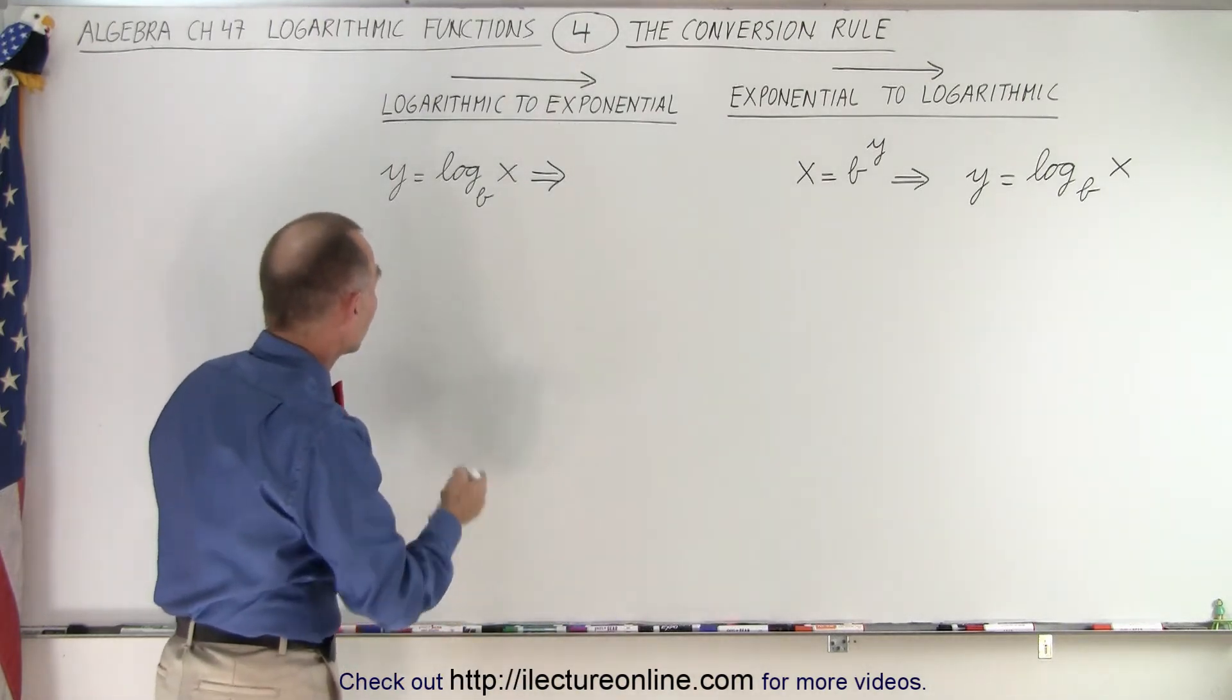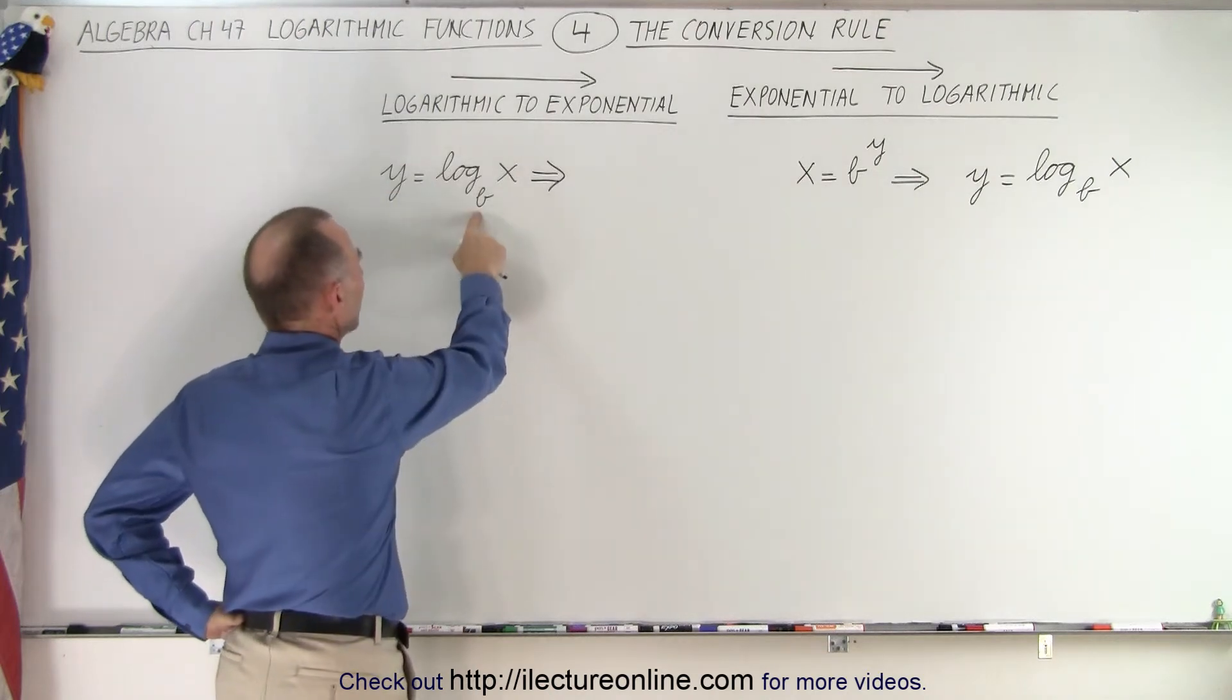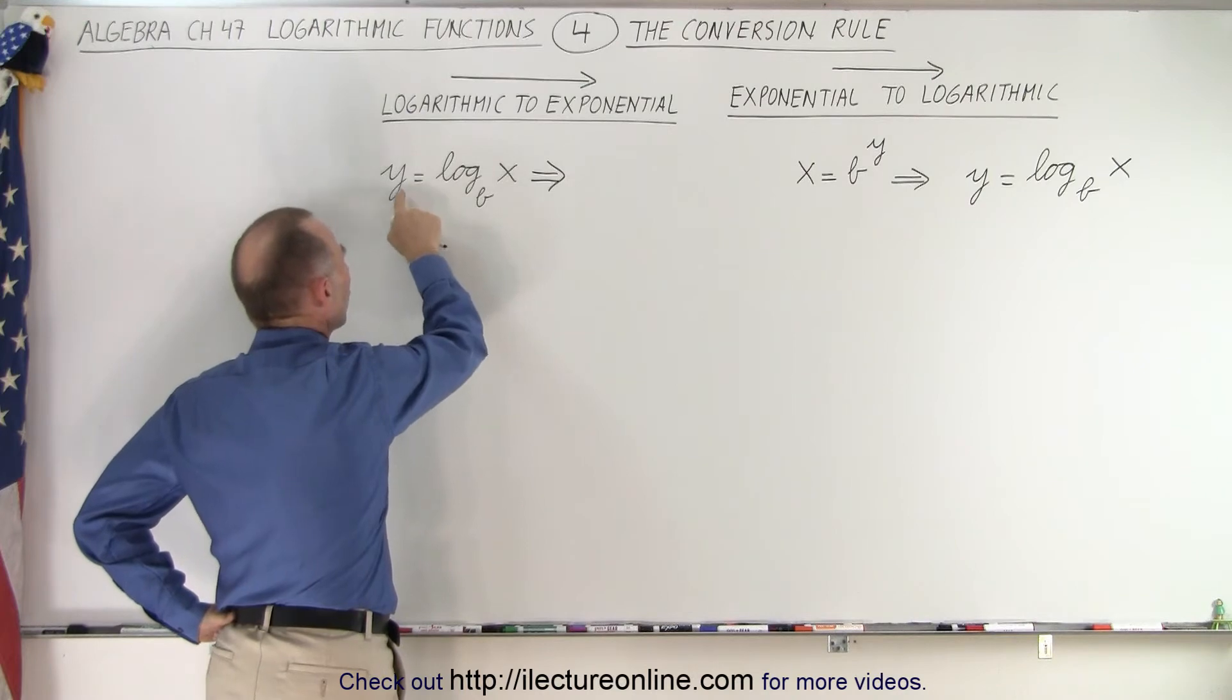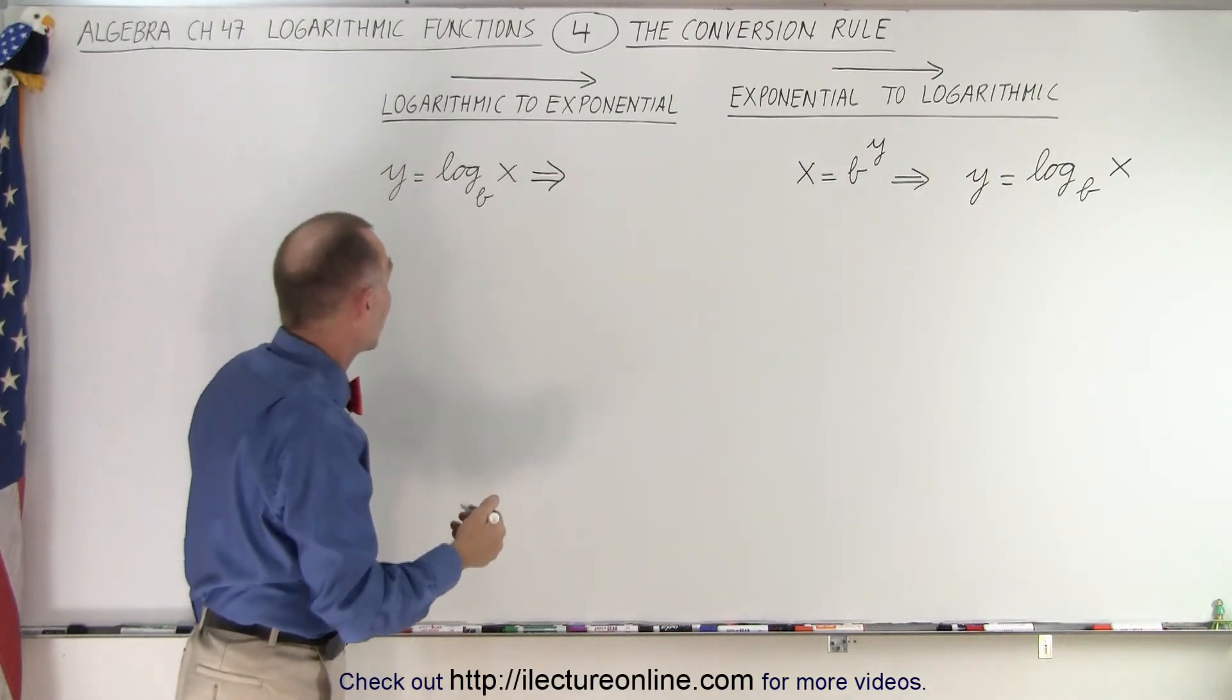So how do we go backwards when we have this? Well first of all we have the base b, we have x, and we have y. Remember y is the exponent or it becomes the exponent when we go to exponential form.